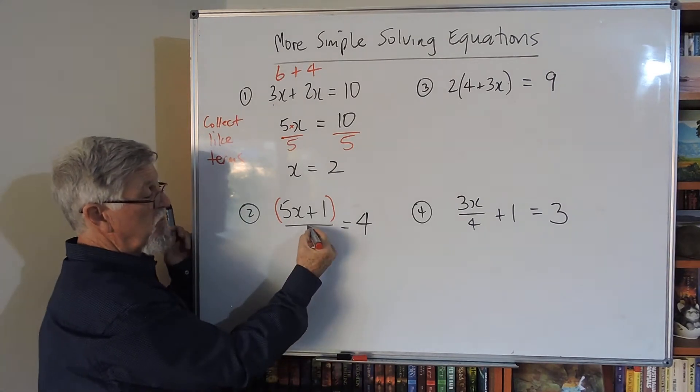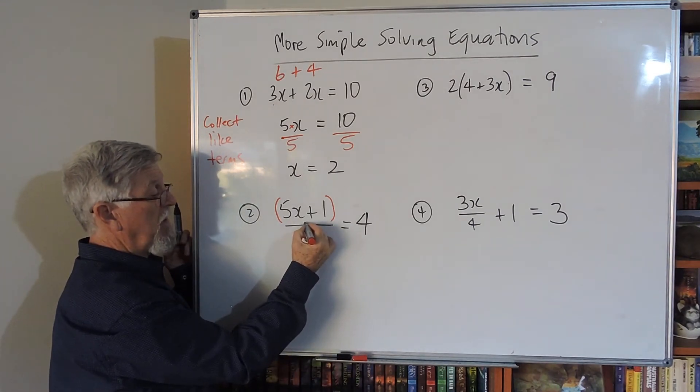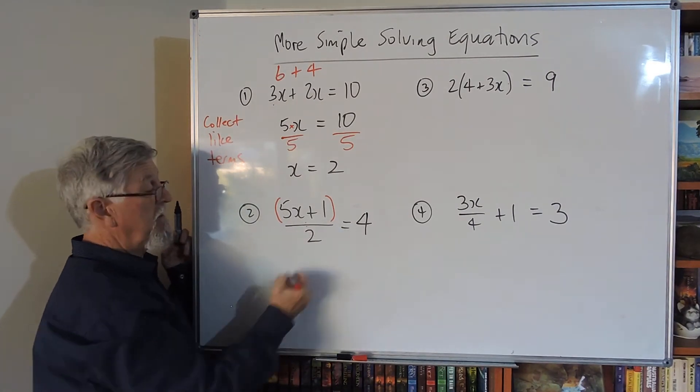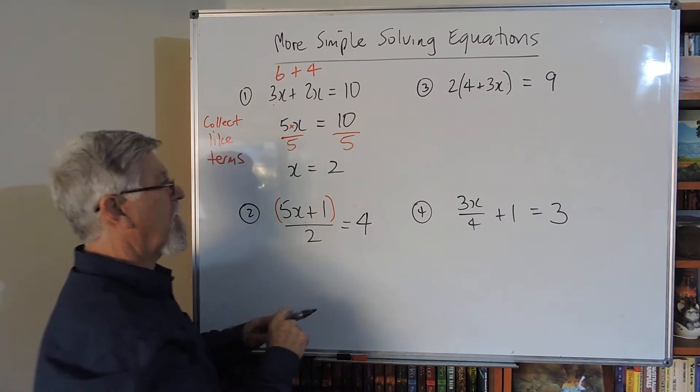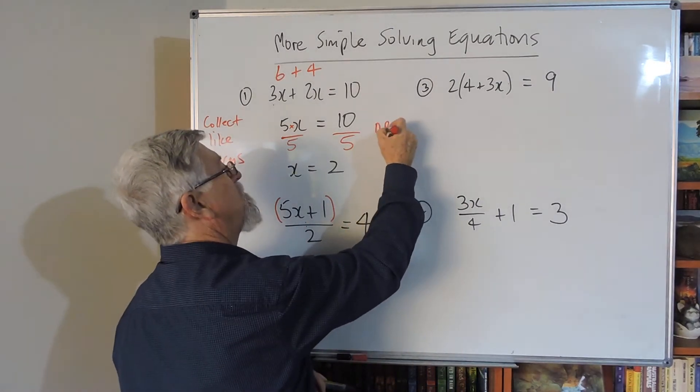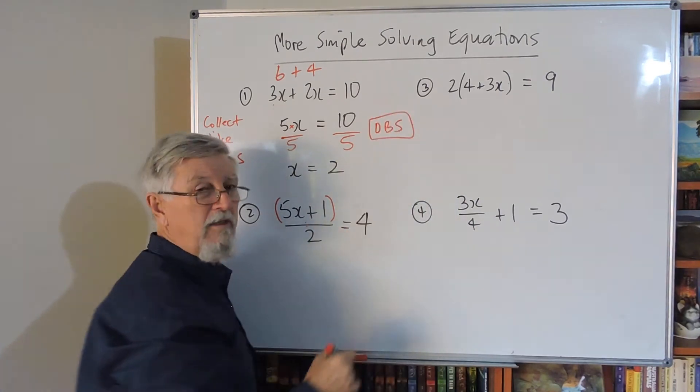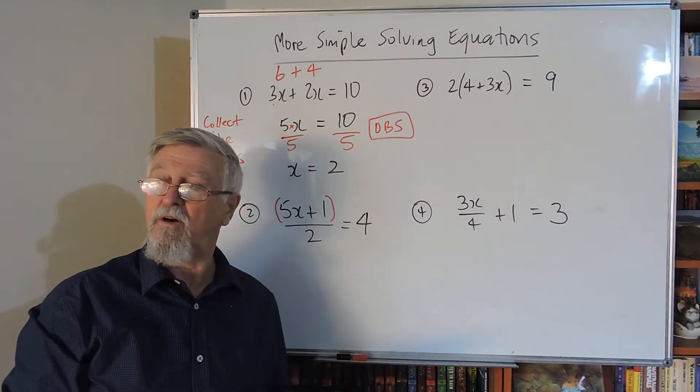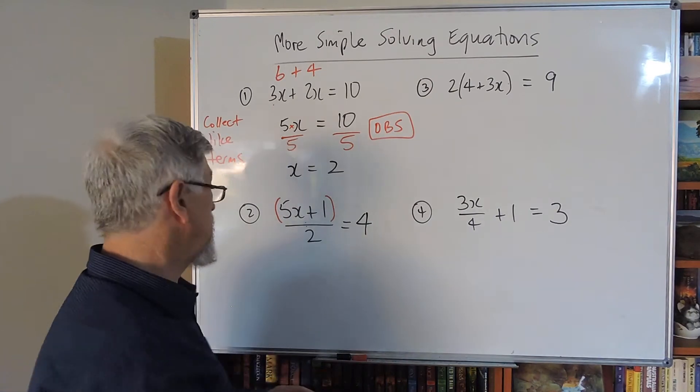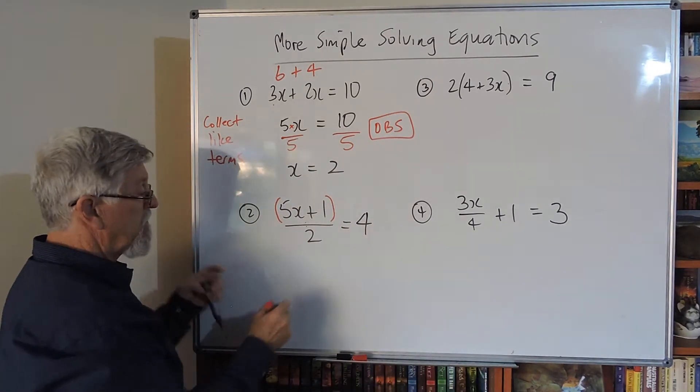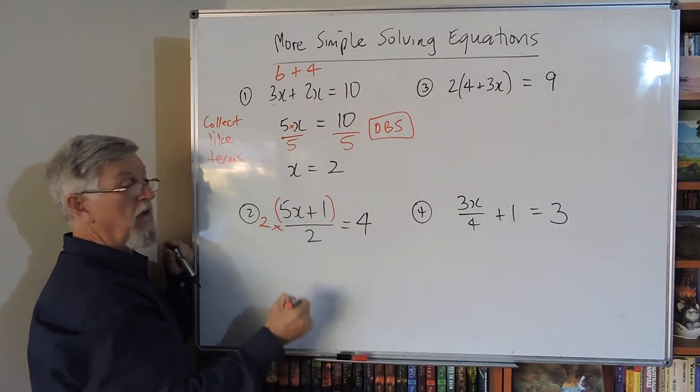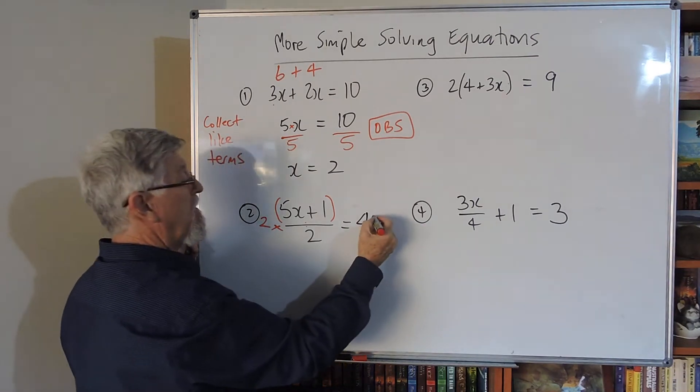The only thing controlling that two is this divided by. What's the opposite of divide by two? Multiply by two. I'm always going to talk about doing the opposite to both sides, no matter how hard it gets.